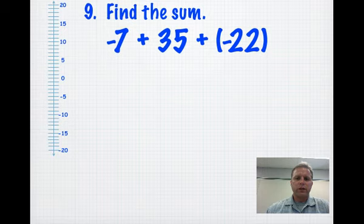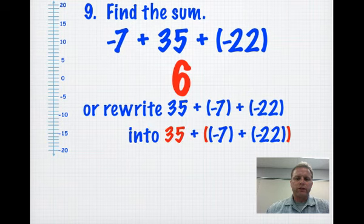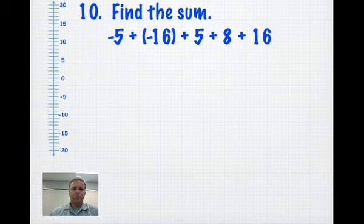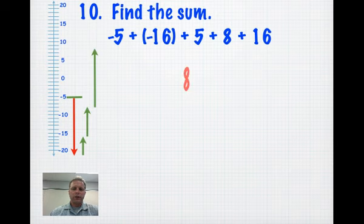Negative 7 plus 35 plus negative 22 ends up at 6. I would rewrite this problem probably and rewrite it as 35 plus negative 7 plus negative 22. That gives me 29 negatives and 35 positives. Got more positives than negatives, so I end up with 6. Would you try this problem? If you go down 5, go down another 16, up 5, up another 8, up another 16, that puts you at positive 8.